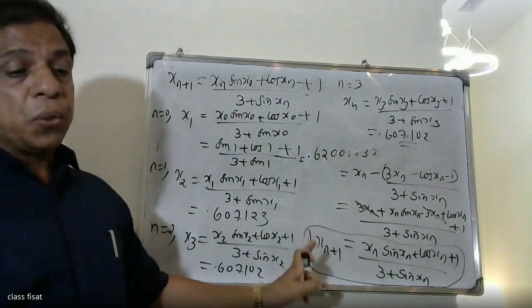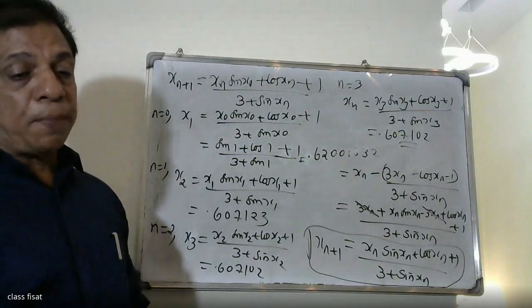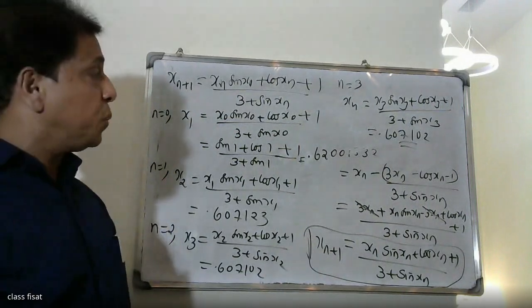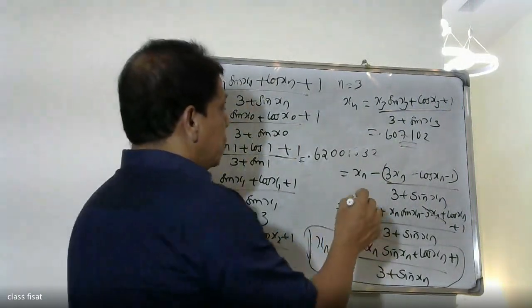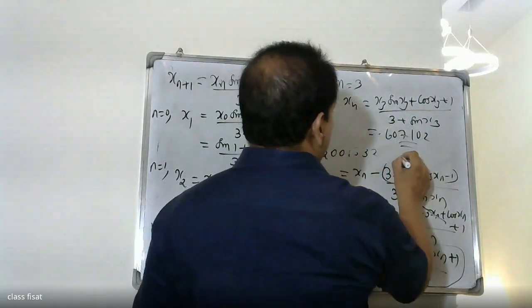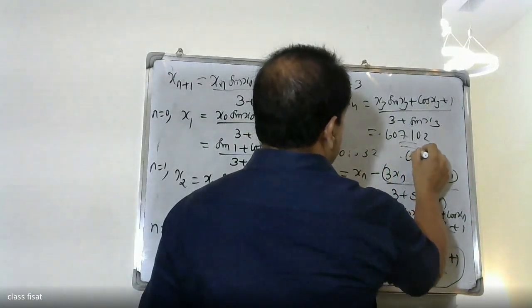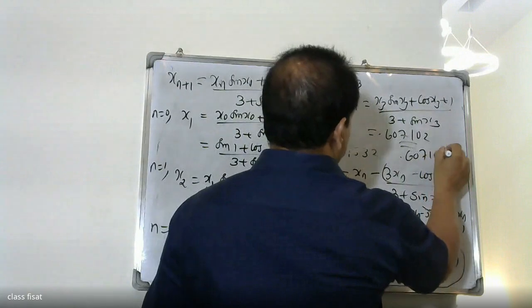Since x3 and x4 agree to 3 decimal places, the approximate root is 0.607.